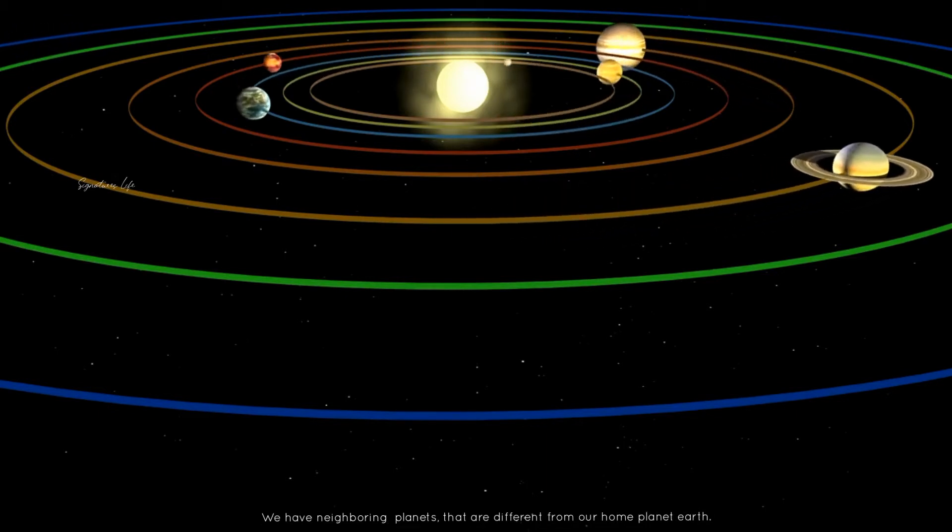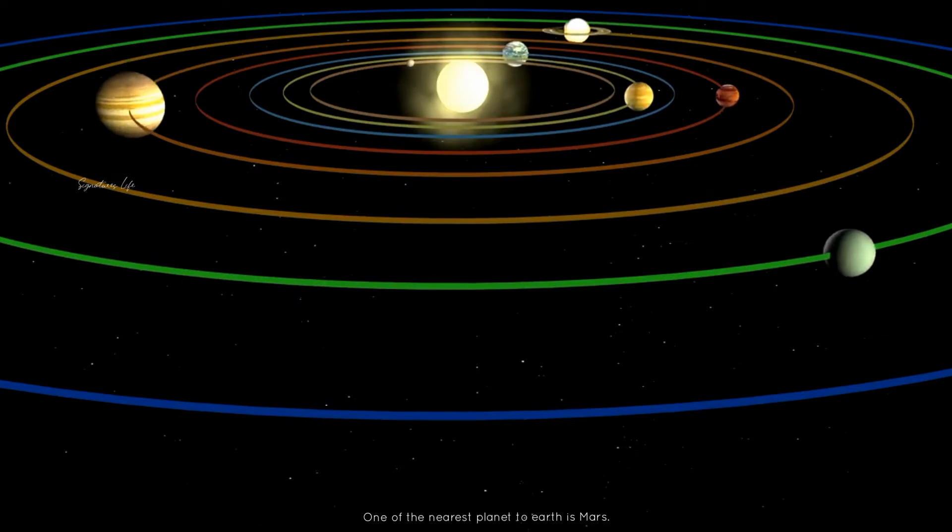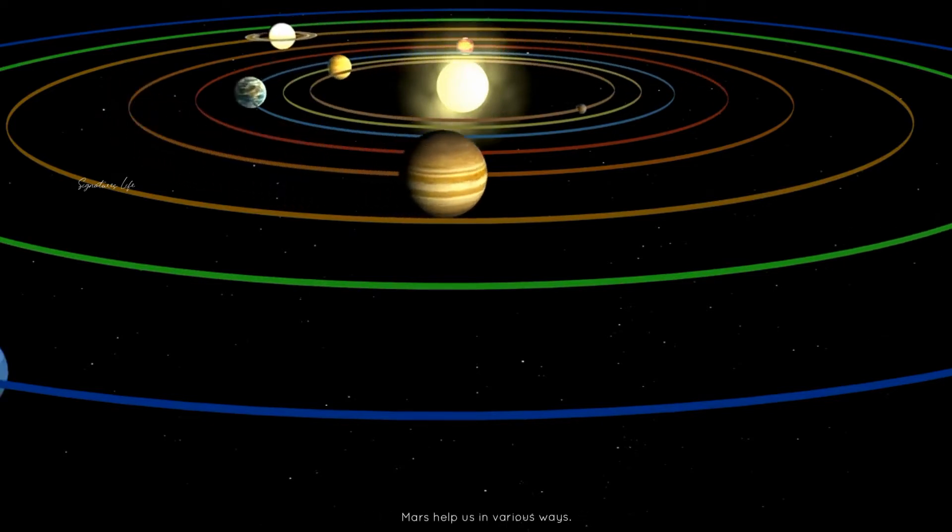We have daybreak planets that are different from our home planet Earth. One of the nearest planets to Earth is Mars. Mars helps us in various ways.